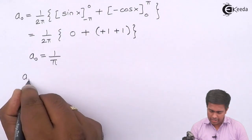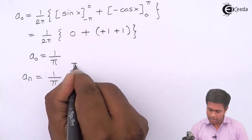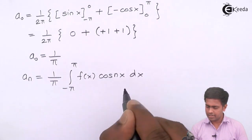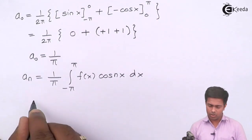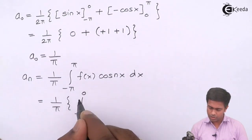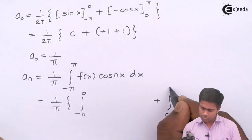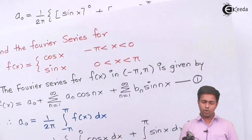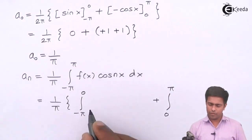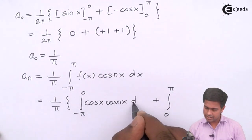Now let's find aₙ. aₙ = 1/π times the integral from -π to π of f(x)cos(nx) dx. Again we divide into two ranges: from -π to 0 where f(x) = cos(x), and from 0 to π where f(x) = sin(x). So aₙ = 1/π [integral from -π to 0 of cos(x)·cos(nx) dx + integral from 0 to π of sin(x)·cos(nx) dx].